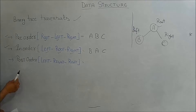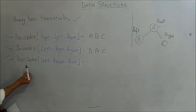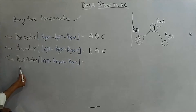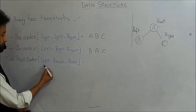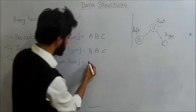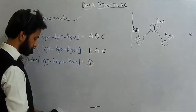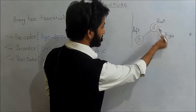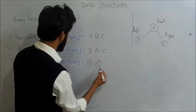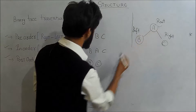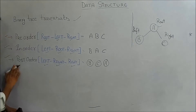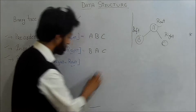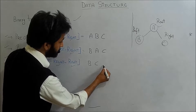After in-order, we have post-order traversal. In post-order, first we write left, then right, and after that we write the root. So the post-order traversal of the given binary tree is: left is B, right is C, and root is A. So post-order traversal is B, C, and A.